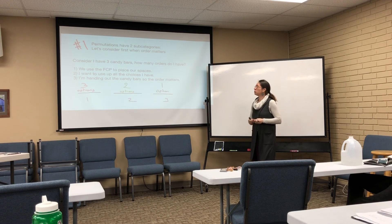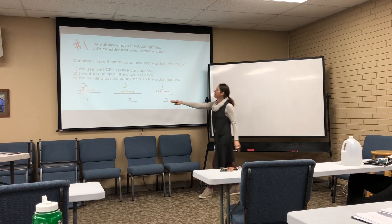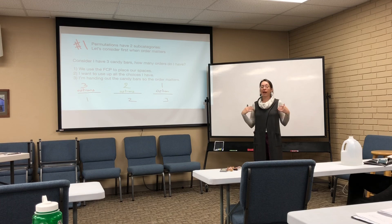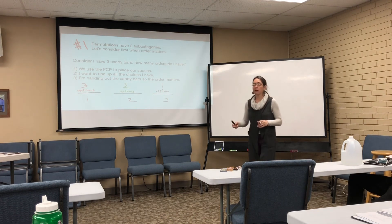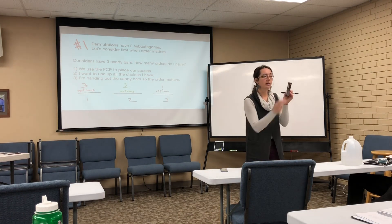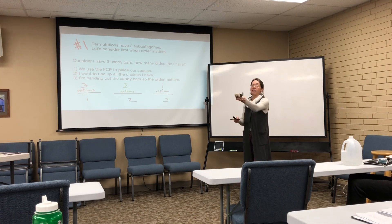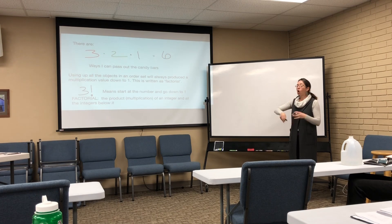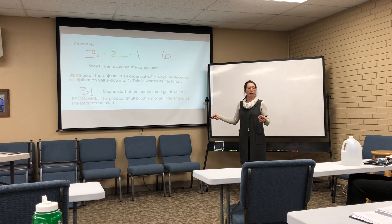With a permutation where order matters, consider three candy bars. We're going to use them all — three spots. I have three options for the first one, two for the second, one for the third. Order would matter because whatever I start with affects what everyone else gets. When we use up all our options in all the ways, starting at the top and multiplying all the way down to one, we have factorial.